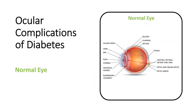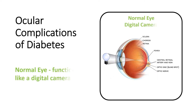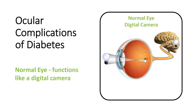The eye functions as a biological digital camera. The light entering the eye is focused on the retina. The light image captured by the neural retina is relayed to the occipital cortex of the brain to be processed and analyzed.